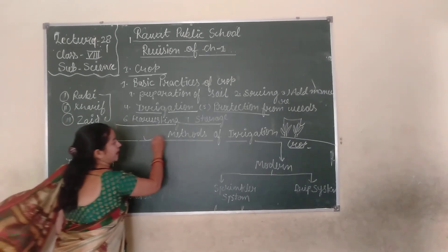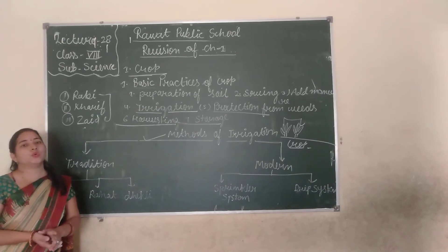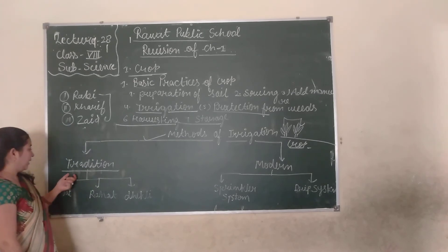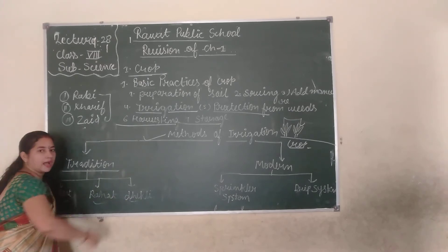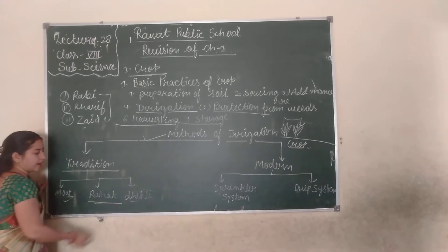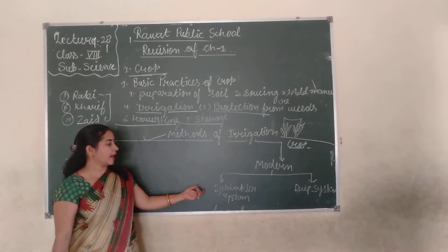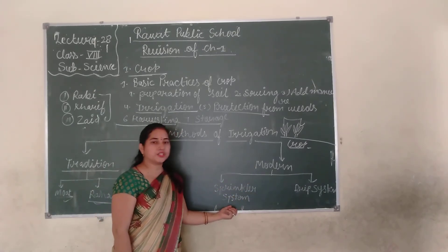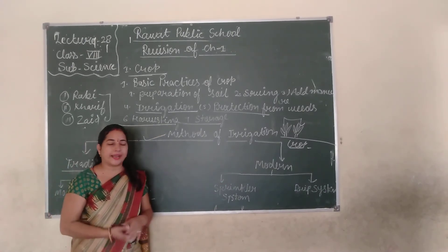Now the next topic is methods of irrigation — which methods we use for irrigation. The first is traditional methods. In traditional methods there are three types. The modern techniques of irrigation have two types: first is the sprinkler system and the second is the drip system.